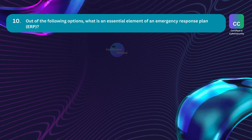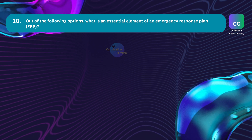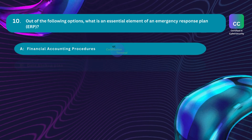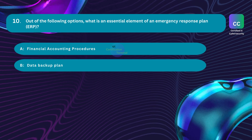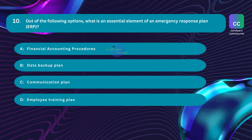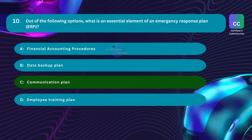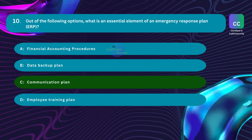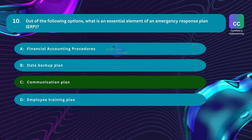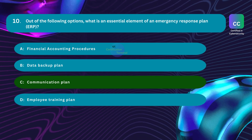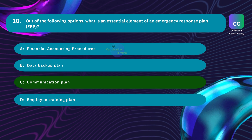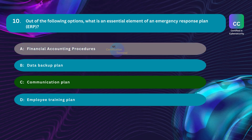Question number ten: What is an essential element of an emergency response plan (ERP)? Option A: financial accounting procedures. Option B: data backup plan. Option C: communication plan. Option D: employee training plan. The correct answer is Option C: communication plan. A communication plan is a fundamental element of an emergency response plan — it outlines how information will be communicated internally and externally during an emergency. Effective communication is essential for coordinating response efforts and providing information to stakeholders.